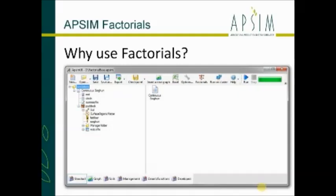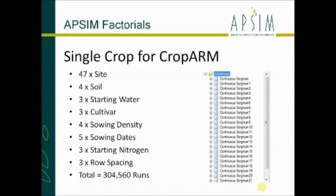Everybody's pretty familiar with the standard AppSim run - a continuous sorghum run, not much to it. We get into a situation where we've done a single crop for our online tool, which multiplies different manager choices. In that we model 47 different sites, four soil configurations, three starting waters, three cultivars, four sowing densities, five sowing dates, three starting nitrogens, three row spacings. That gave us a total of 304,000 different simulations to run - there's just no way you could put that into the interface.